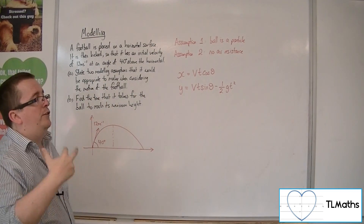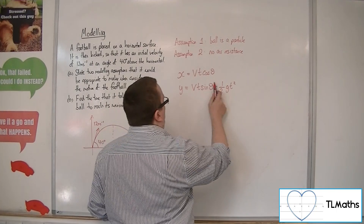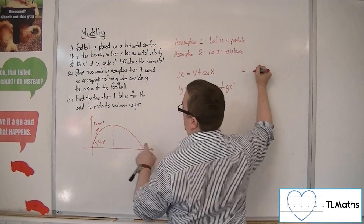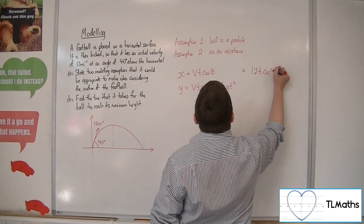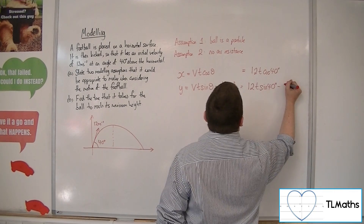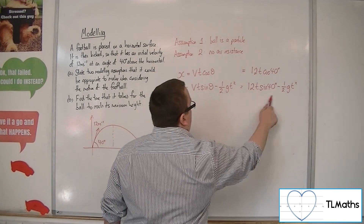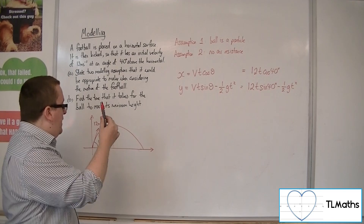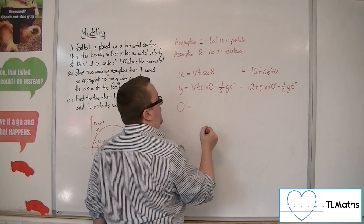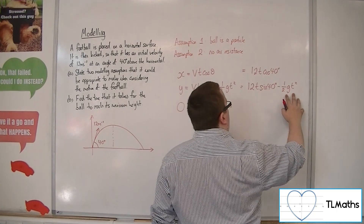We have the position of y, and to get the velocity we differentiate with respect to t. So the derivative gives us V sin θ. Substituting in values, the y position is 12t sin 40 minus one half gt squared. The derivative of this will equal 0 because the velocity at that point will be 0 in the y direction. So 0 equals 12 sin 40, and the derivative of the gravity term gives minus gt.